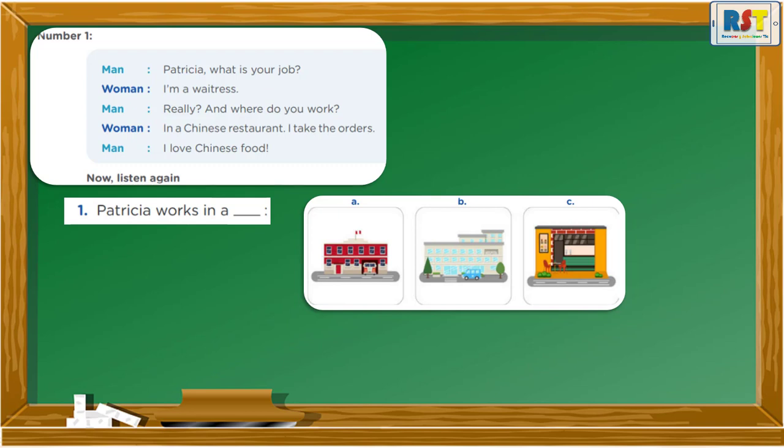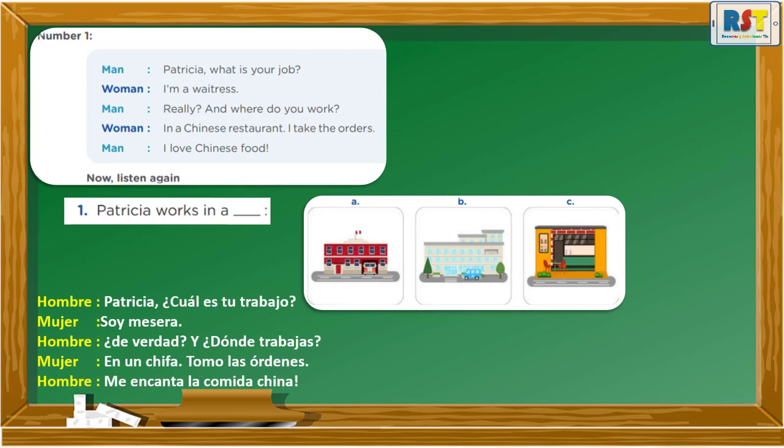In a Chinese restaurant. I take the orders. I love Chinese food. Now listen again: Patricia, what is your job? I am a waitress. Really? And where do you work? In a Chinese restaurant. I take the orders. I love Chinese food.